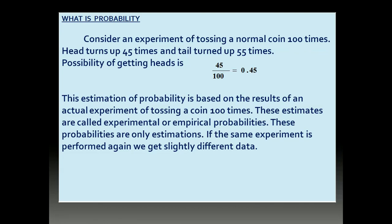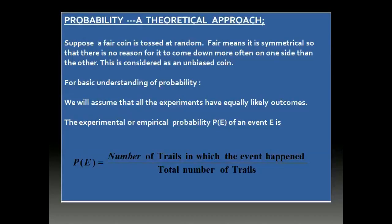If the same experiment is repeated, we will definitely not get the same data, so this is considered as an experimental probability. For theoretical probability, suppose a fair coin is tossed at random. Fair means there is no partiality — the coin has heads and tails, and the coin is symmetrical. There is no possibility that a certain side will appear more often; it is not a biased coin. So for basic understanding of probability, we assume that all experiments have equally likely outcomes.